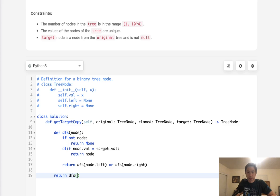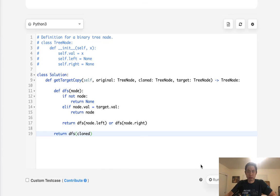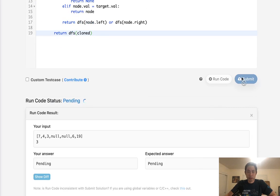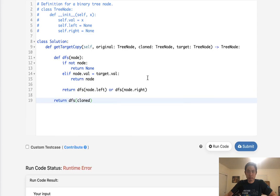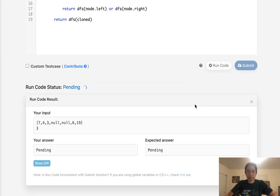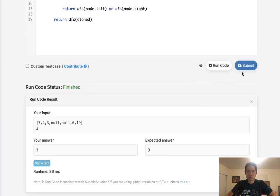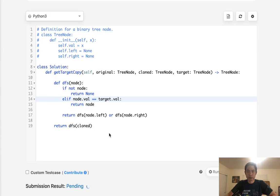So really just have to return this depth first search of the cloned, and we have target up here. We don't even need the original, right? Just see if that works. Of course, syntax equals equals.